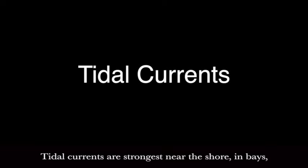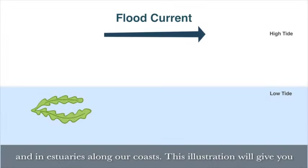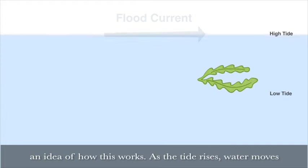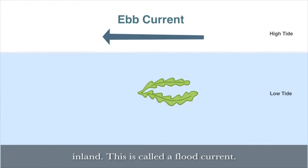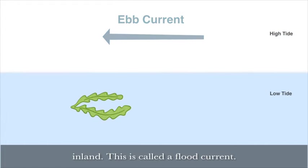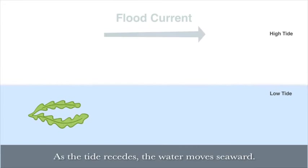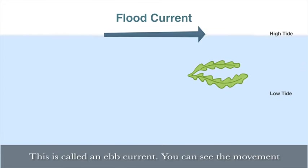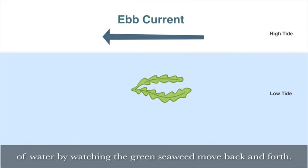Tidal currents are strongest near the shore, in bays, and in estuaries along our coasts. This illustration will give you an idea of how it works. As the tide rises, water moves inland — this is called a flood current. As the tide recedes, the water moves seaward — this is called an ebb current. You can see the movement of water here by watching the green seaweed move back and forth.